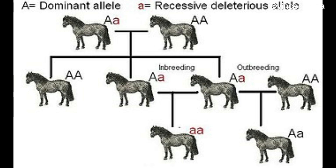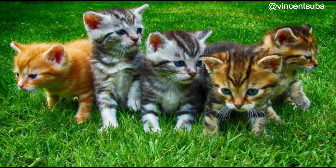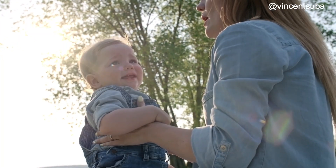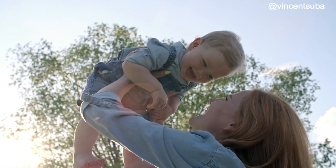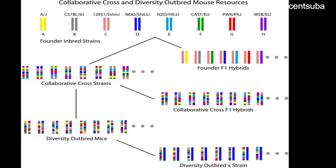Therefore, the offspring will receive these identical alleles from the parents. This will increase levels of homozygosity, which reduces the genetic diversity in the gene pool. On the other hand, when the offspring is formed from parents who are not closely related, they have different alleles, so the proportion of heterozygosity will increase, as parents from different families will have different genes and different alleles.